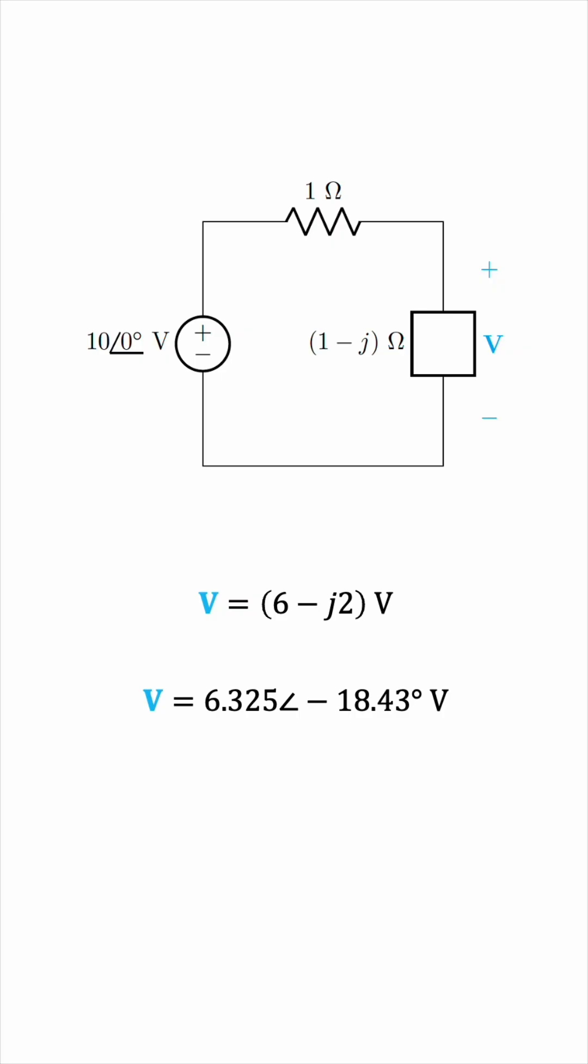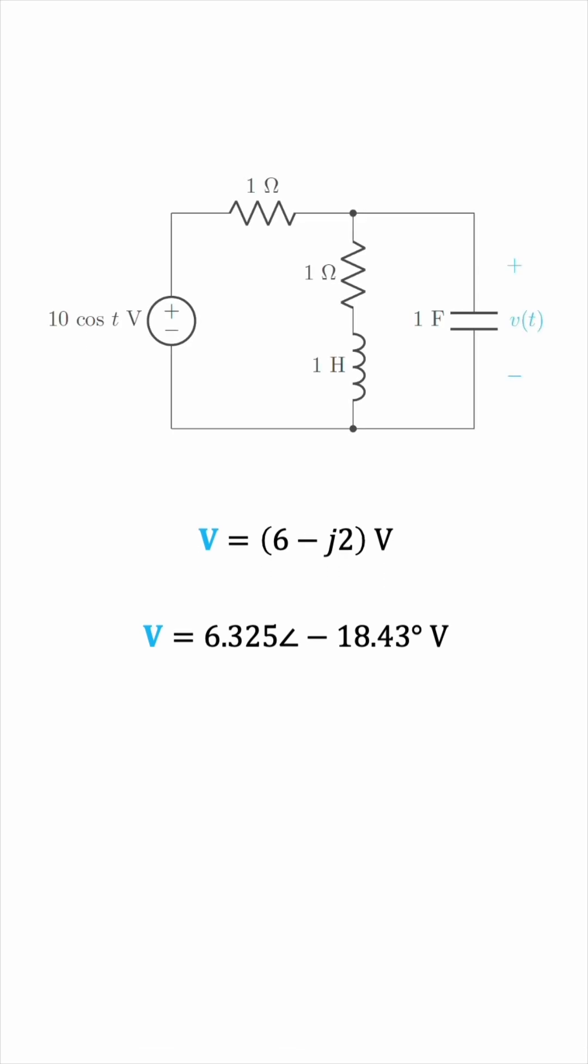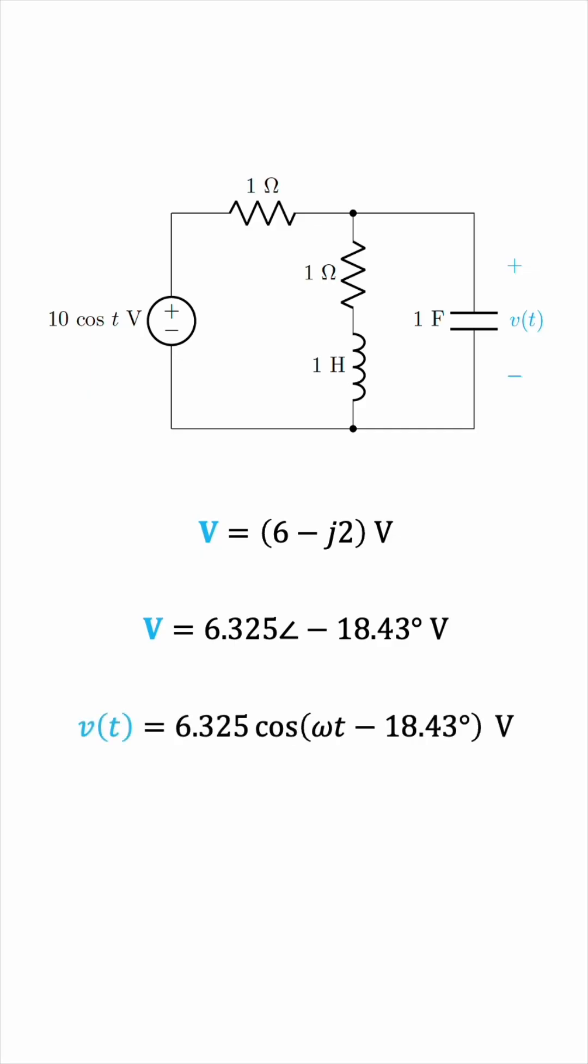Now, we can find V of t, which is the initial voltage labeled in the time domain circuit, the original circuit. This will be 6.325 as the amplitude of the sinusoid. It'll be cosine omega t with the phase negative 18.43 degrees.